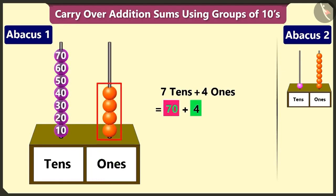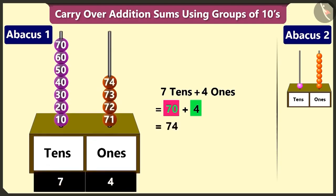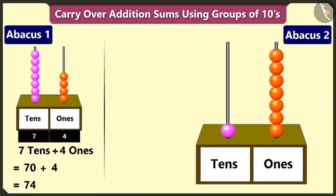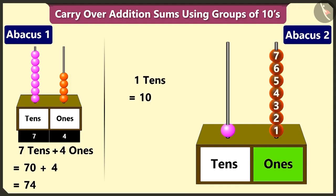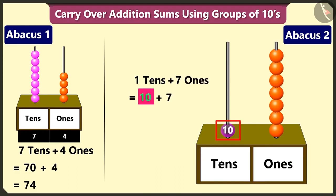Now, to add 4 to 70, count after 70: 71, 72, 73 and 74. Well done. And in the second abacus, in the tens box, there is 1 bead — that is 1 ten. In the ones box, there are 7 beads, that is 7 ones. So, adding 1 ten and 7 makes 17.